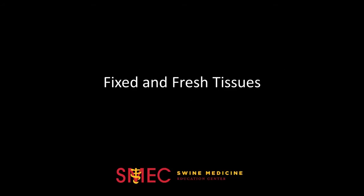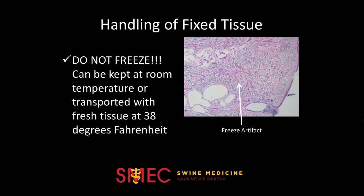Your fixed and fresh tissues may be handled differently. With fixed tissue, it is extremely important not to allow the sample to freeze, as it can develop artifacts that are not diagnostically valuable. Technically, fixed tissue can stay at room temperature for long periods of time, but it is okay to transport it with the fresh tissue at around 38 degrees Fahrenheit as long as it does not reach low enough temperatures to freeze.